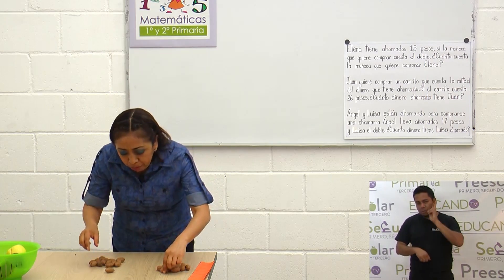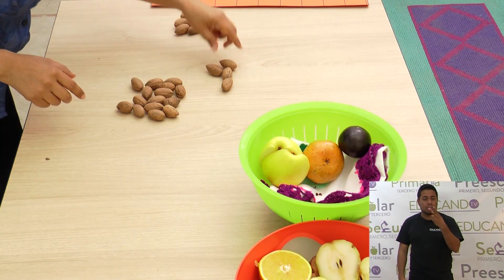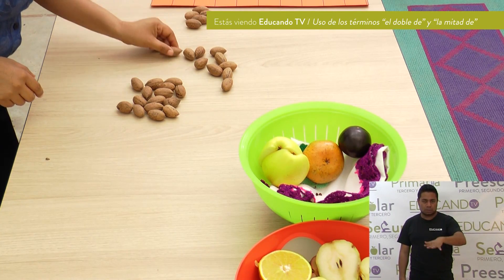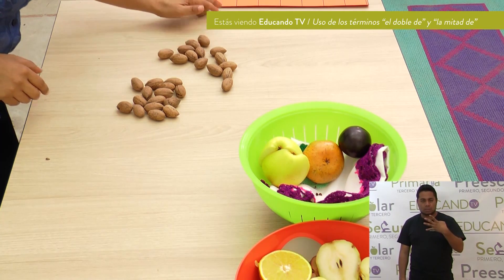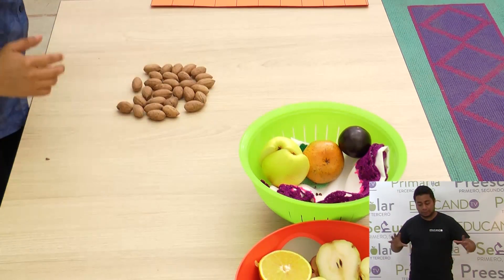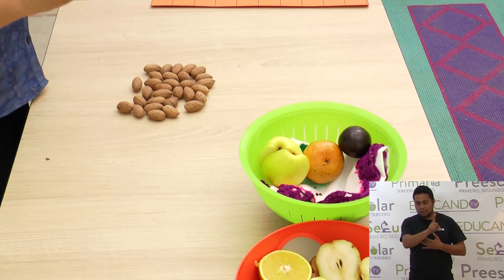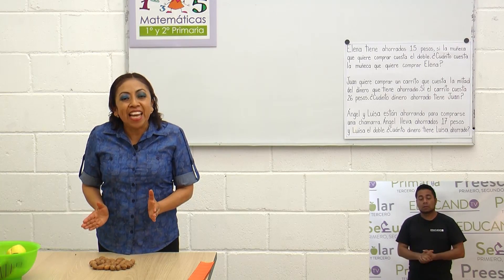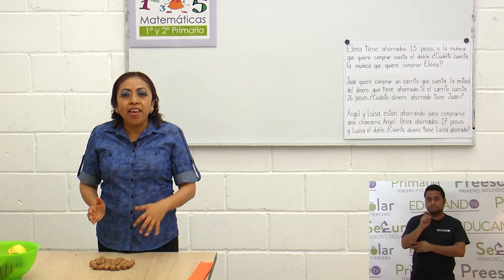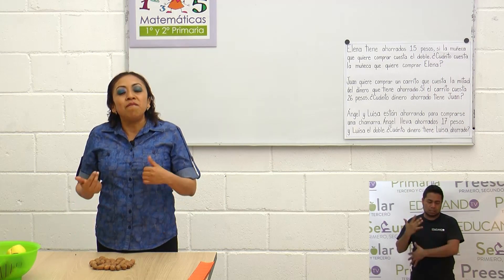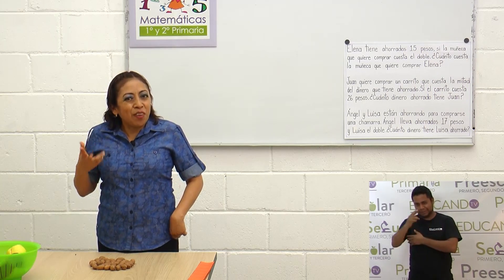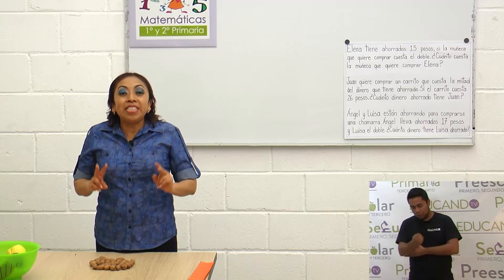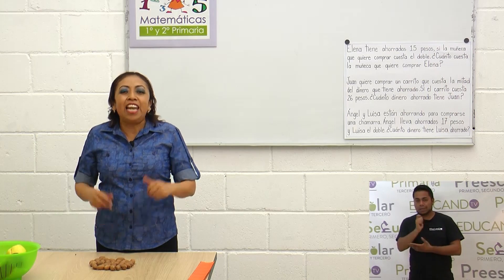Vamos a hacerlo: contamos quince nueces más — uno, dos, tres... hasta quince — y juntas es el doble de quince. Es decir, quince y quince, o quince más quince, son treinta. Por lo tanto, treinta es el doble de quince: dos veces quince. ¿Te acuerdas cuando trabajábamos dos veces seis, dos veces ocho, dos veces nueve? Pues es el doble — es dos veces la misma cantidad.